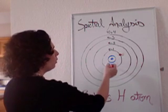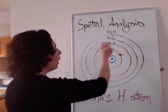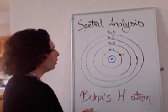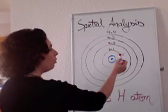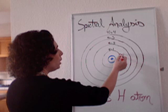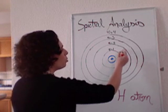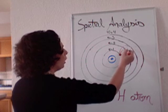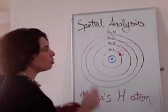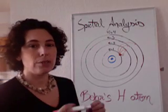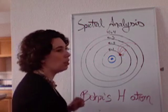The electron may be in one shell or a higher energy shell, but the electron is only allowed to be in a certain specific shell. So the electron has to jump from here to here — from n equals 1 to n equals 2, or n equals 1 to n equals 3, or so forth. In order to do that, it needs to absorb the exact right amount of energy. The electron is not allowed to go anywhere in between these energy levels.